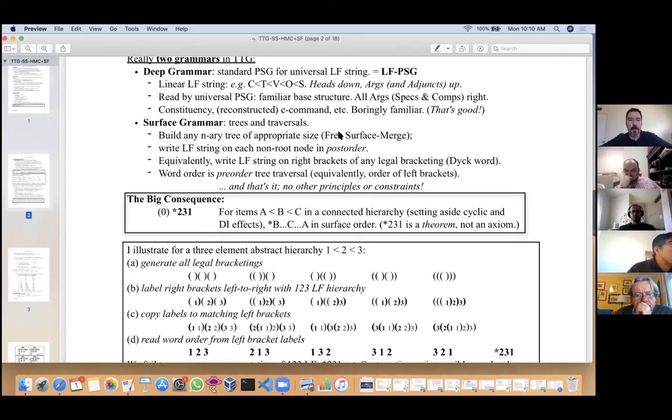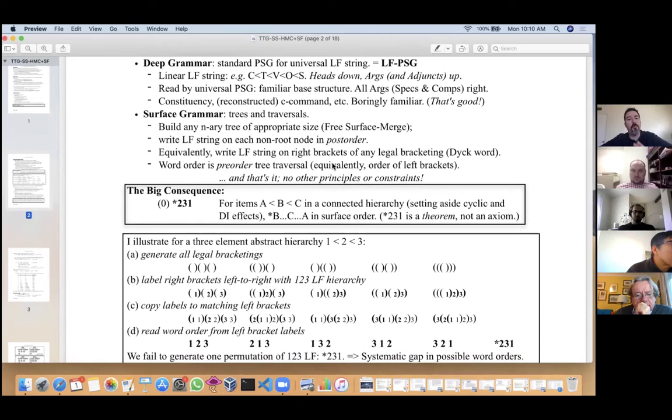You'll build any n-ary branching tree with the appropriate number of nodes—a sort of free merge of the surface structure. Then you'll go through that tree in what's called post-order and write the LF elements from the LF string onto each node other than the very root. This includes non-terminals as well as terminals. There's an equivalent formulation over bracketed strings where we write the LF string onto the right brackets in any legal bracketing, any Dyck word. Word order then will be pre-order traversal of the same tree, or equivalently in the bracketed string, it'll be the order of left brackets. That's it—that's this theory of syntax. There's no other constraints, nothing else to say about it, except for all the consequences.